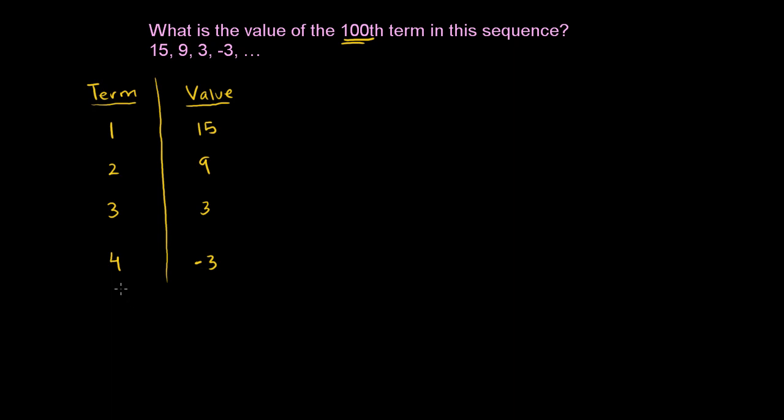And they want us to figure out what the 100th term of this sequence is going to be. So let's see what's happening here, if we can discern some type of pattern. So we went from the first term to the second term. What happened? 15 to 9, it looks like we went down by 6. It's always good to think about just how much the numbers changed by. That's always the simplest type of pattern. So we went down by 6. We subtracted 6.